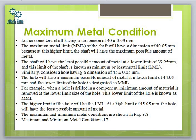For maximum metal condition, consider a shaft of dimension 40 ± 0.05 mm — clearly a bilateral tolerance. The upper limit is 40.05 mm, which is the maximum possible dimension and involves the maximum amount of metal, called the maximum metal limit (MML). The lower limit is 39.95 mm, which is the least possible dimension and involves the minimum amount of metal, called the least metal limit (LML). For a hole of 45 ± 0.05 mm, the opposite applies: the lower limit (44.95 mm) is the maximum metal condition.